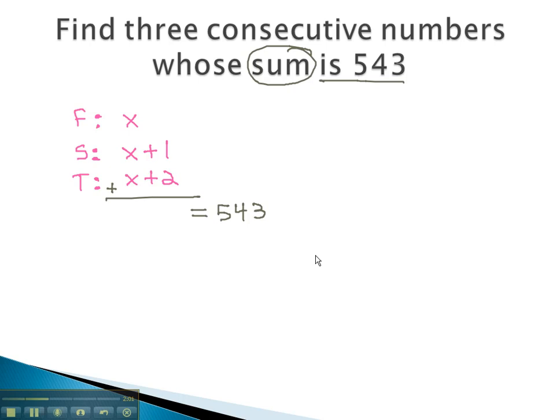Fortunately, our like terms are already lined up. Let's combine them. 3x plus 2 plus 1 is 3. This now gives me an equation I can solve to find my integers.